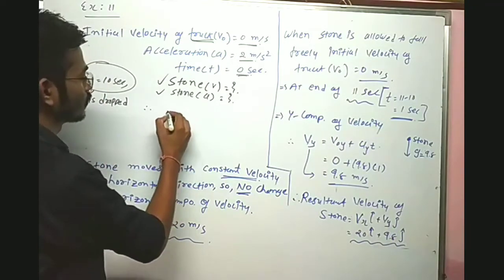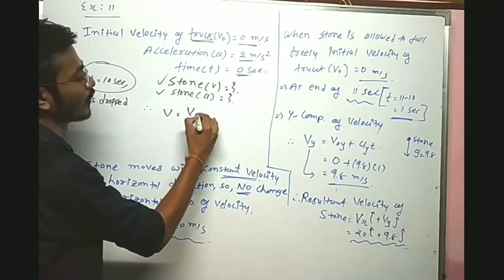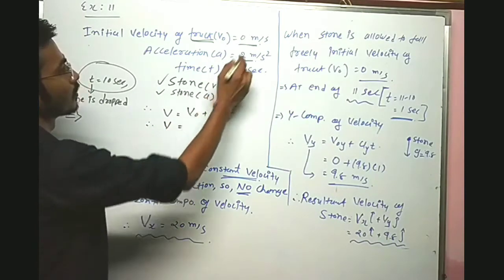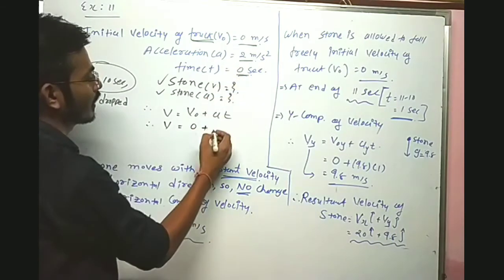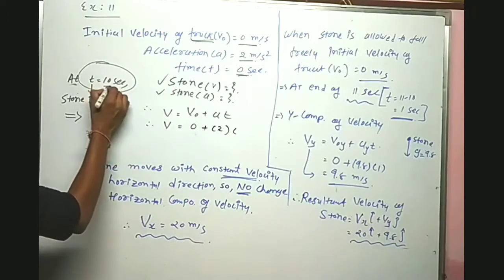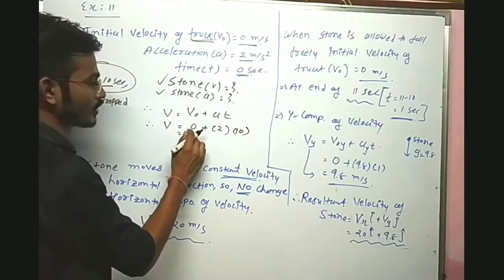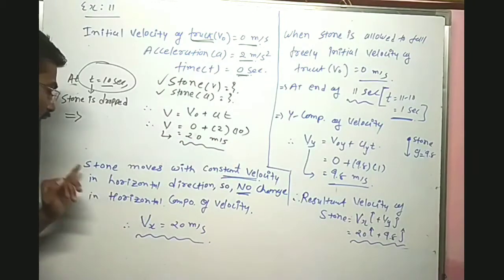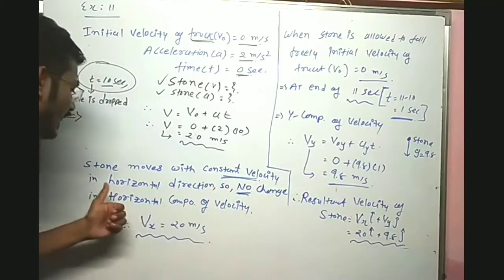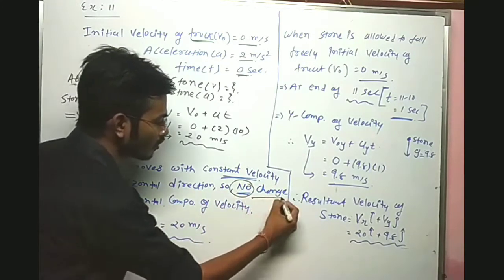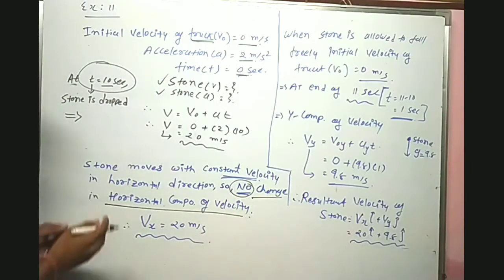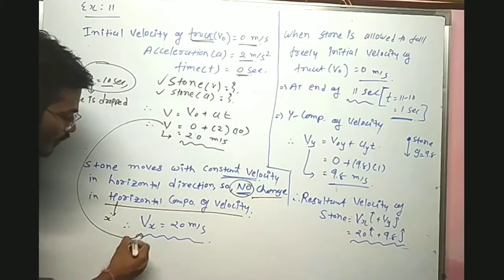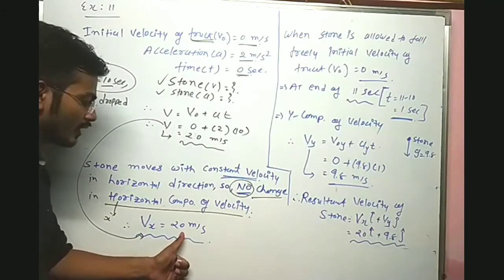First we have to find out the velocity. We have the equation v = v₀ + at. Here v₀ is zero, acceleration is 2, and time t is 10 second. So v = zero plus 2 multiplied by 10 = 20 meter per second. The truck moves with constant velocity in the horizontal direction, so there is no change in the horizontal component of velocity. So vx = 20 meter per second.